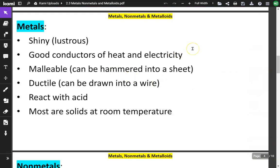Metals are shiny. Think about metals that you've seen before, like copper, gold, silver. They're very shiny. The word lustrous means the same thing. Metals are good conductors of heat and electricity. The wiring inside of your house is probably copper wiring, and copper is a very good conductor of electricity.